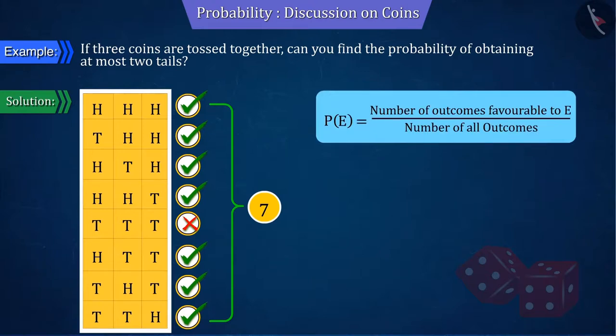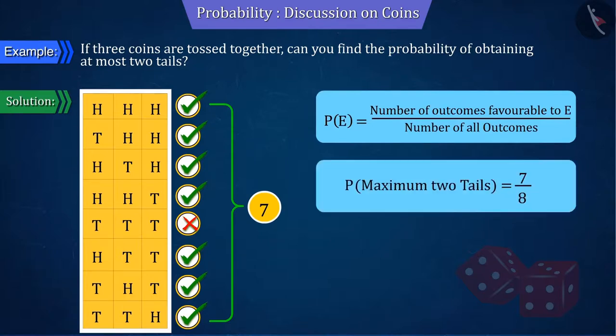Substituting the value according to the above results in the probability formula, the probability of obtaining at most two tails is 7 by 8.